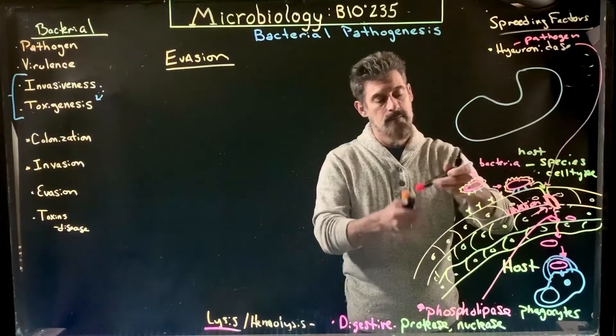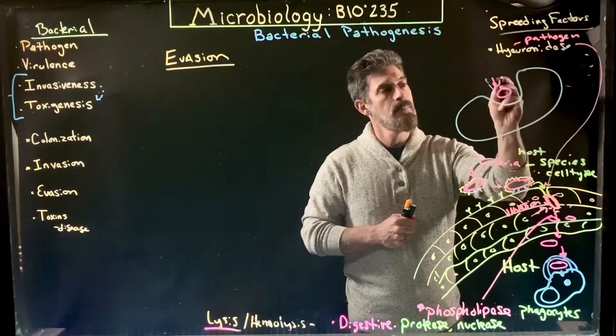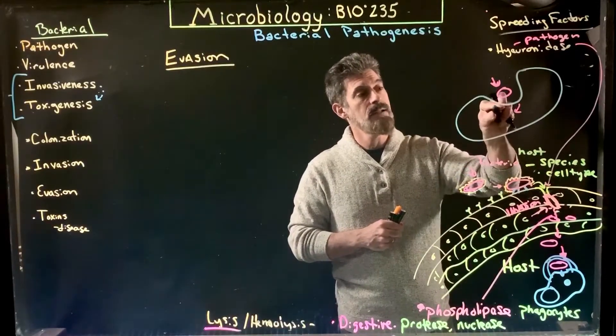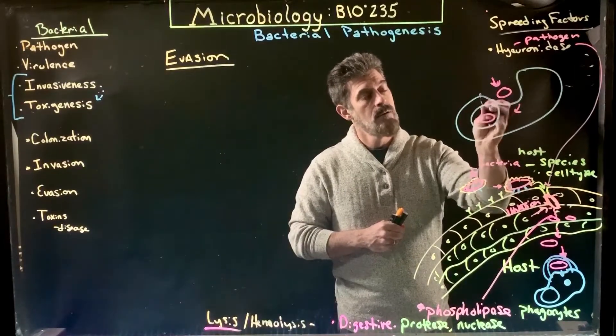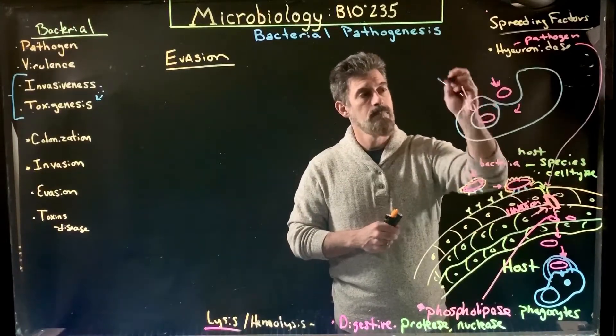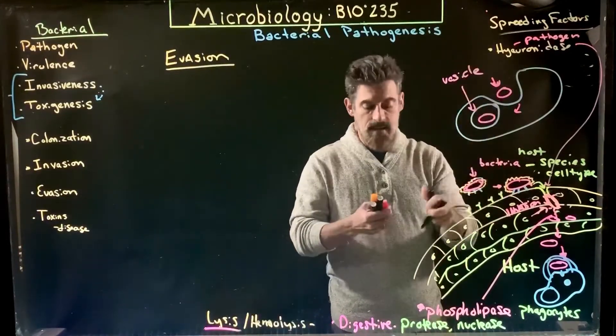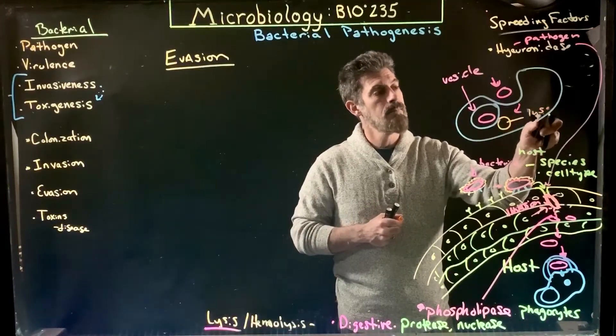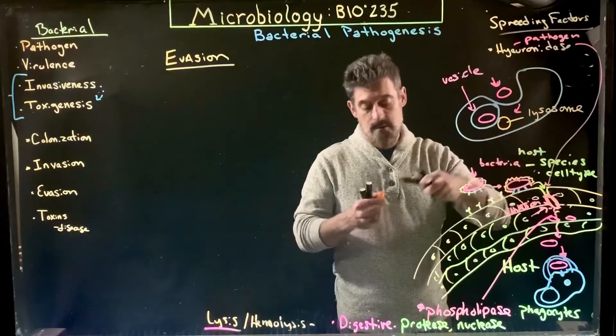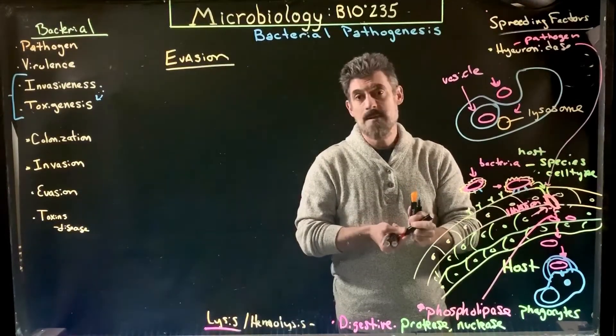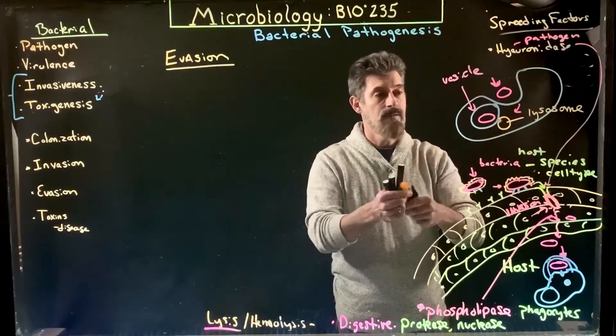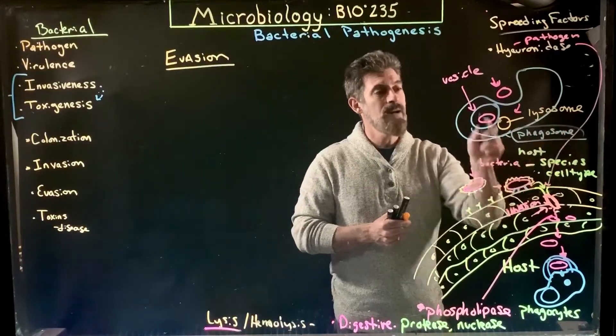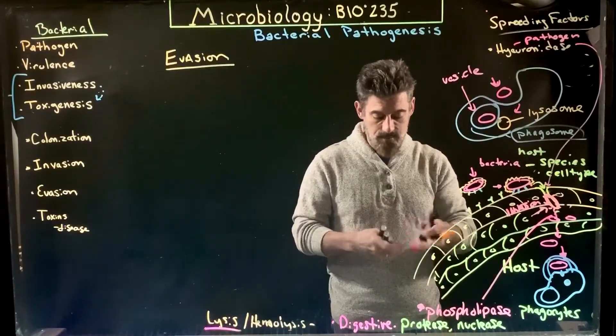The phagocyte would start to pull in the bacterial cell, the invading cell, and eventually it would form a vesicle. So you would end up getting this vesicle in the cell with the bacteria inside it. That structure would then bind to a lysosome, which typically has a very low pH, very acidic, and has digestive enzymes. They would bind together and form a structure called a phagosome, which would break down and destroy the bacteria. That's usually the first thing that can happen.